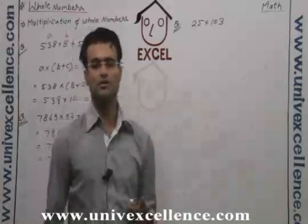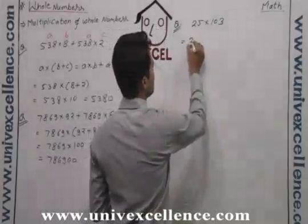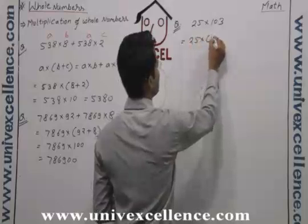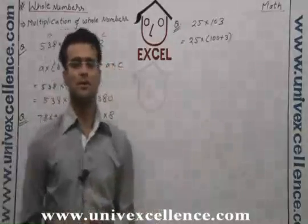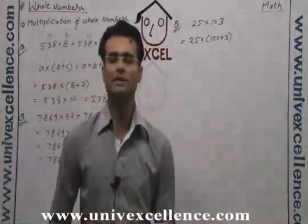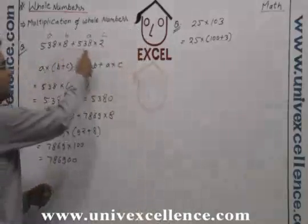Now how can we make the zeros? Yes we can make the zeros. How can we do that? Can we write this 103 as 100 plus 3? We can write down 100 plus 3 here.